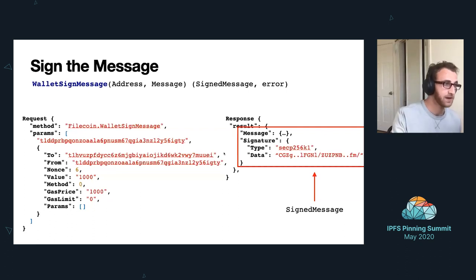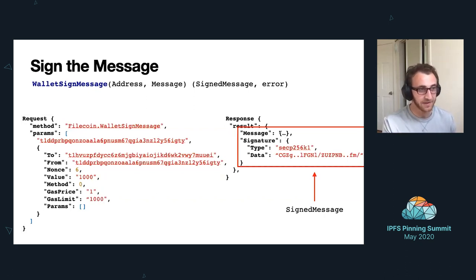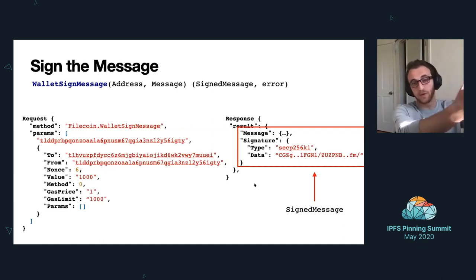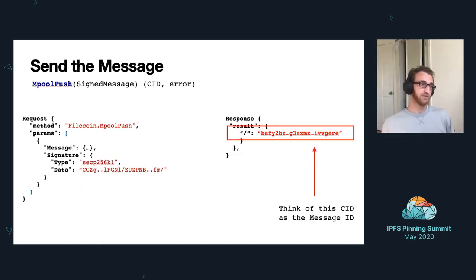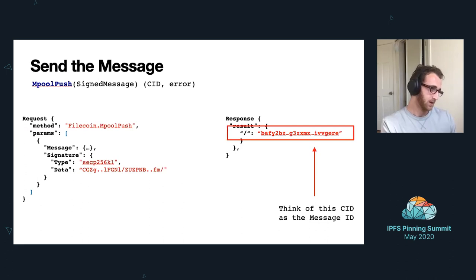On the left, we pass an address and the message we constructed as parameters to WalletSignMessage. On the right, the response includes the message plus a signature, which is how the network validates that I authorized this transaction. We then take the signed message — which includes both the message and the signature — and call MPoolPush with it. We get back a CID, which you can think of as the message ID. Now your message is in the pending message pool, waiting to be processed by a miner.